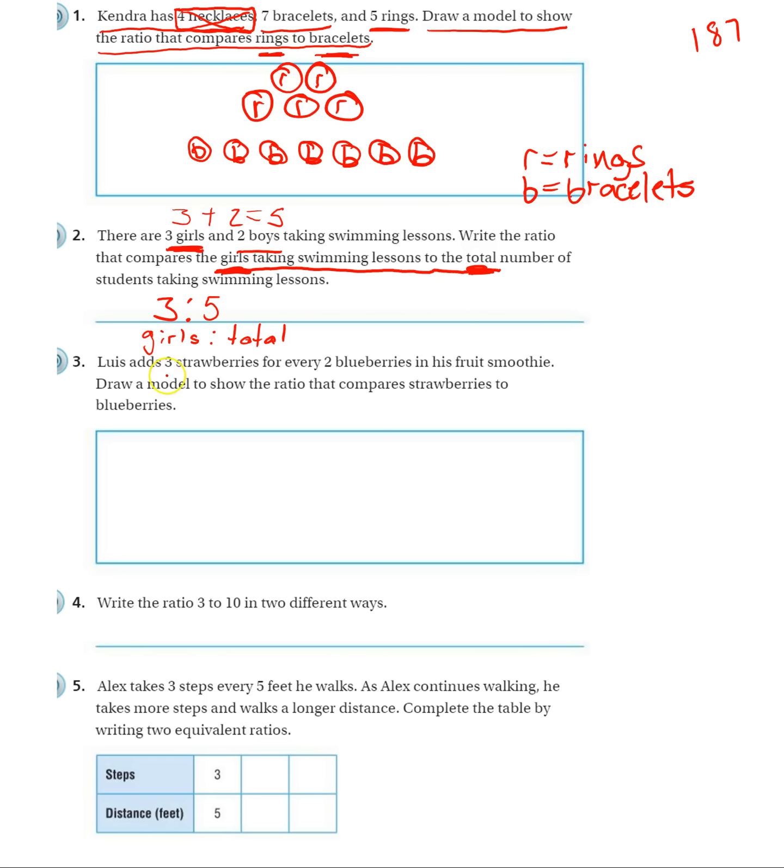Number three. Lewis adds three strawberries for every two blueberries. Draw a model that shows the ratio that compares strawberries to blueberries. So again, this is going to be very similar to number one. Strawberries first. And I'm going to put an S inside those for strawberries. I'm going to make my key that S stands for strawberries.